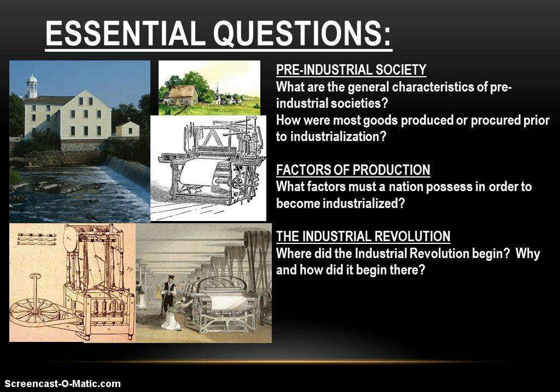As we look at pre-industrial society, we'll examine the general characteristics that pre-industrial societies possessed, both in the past and in the present, because they do still exist today. In pre-industrial societies, how are goods produced and procured? How do people get the stuff that they need before there's a mega-mart and a big-box superstore?